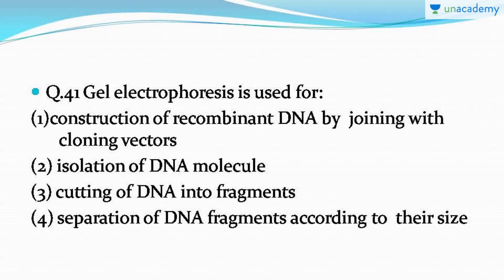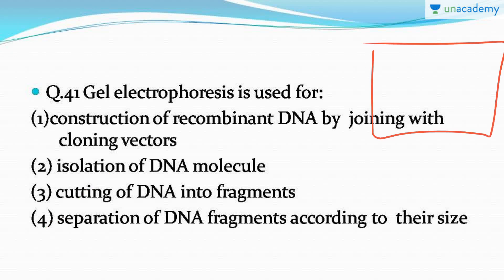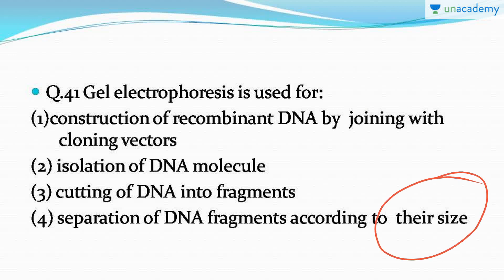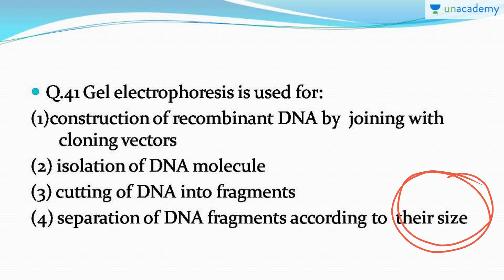Next question: gel electrophoresis is used for — it's a very easy question straight from NCERT. The correct answer is option number four: separation of DNA fragments according to their size. In the diagram of gel electrophoresis, electrophoresis of DNA starts in agarose gel; smaller particles move further while larger particles remain behind. Remember the keyword is size — they may try to confuse you with shape, weight, or other words, but the answer is always size.